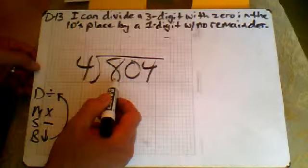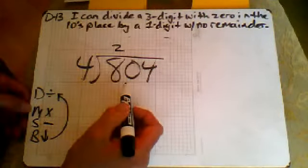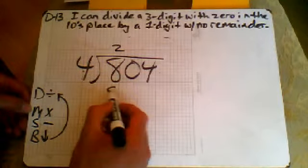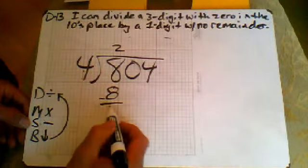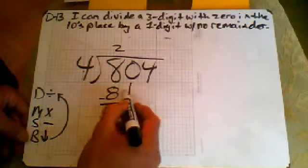So four goes into eight two times. And then multiply. Two times four is eight. Subtract. Eight from eight is zero. And then bring down our zero.